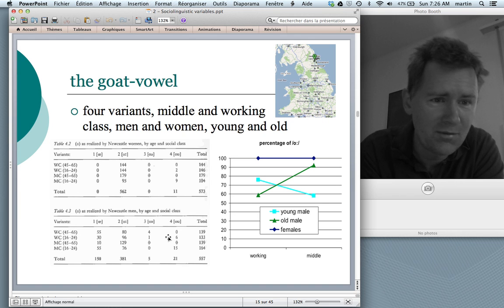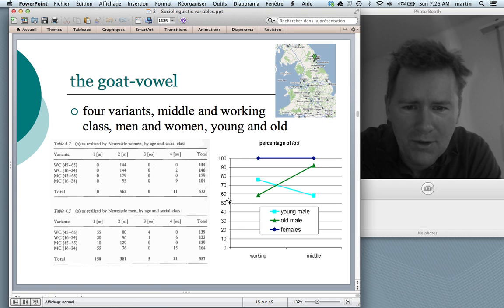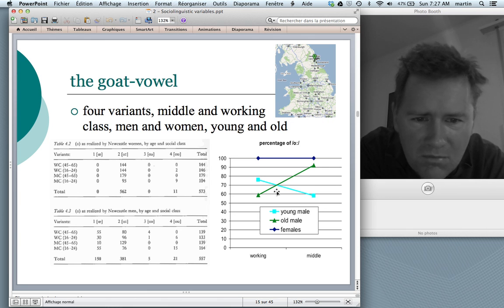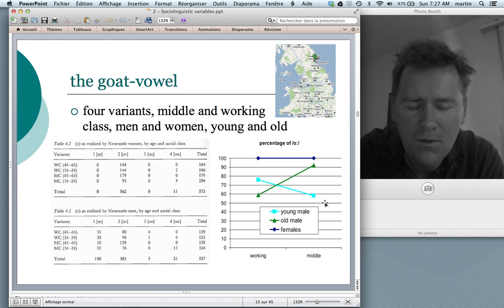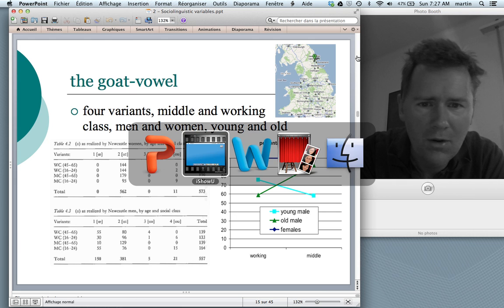You have these four realizations, three social variables, class, gender, and age, and you get all these numbers. And that makes it difficult. To understand these things a little better, I made a graph here. Here we have the ratio of the O realization, goat. And we have working class people, middle class people, and the three lines here correspond to females, that's the dark blue line. Then for males, we have old males, that's the green one. And young males, that's the strange green one.